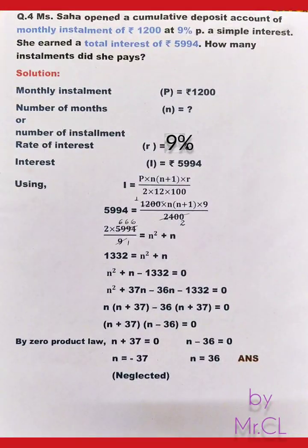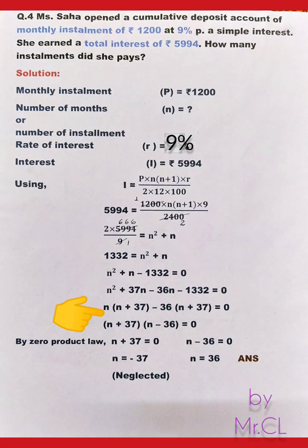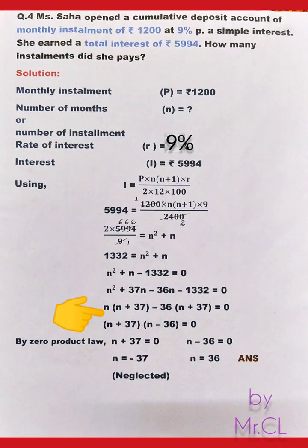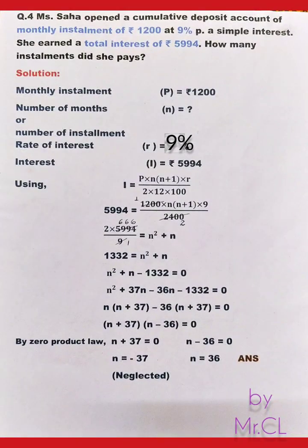Factoring: n(n + 37) − 36(n + 37) = 0, giving (n + 37)(n − 36) = 0. By the zero product law, either n + 37 = 0, so n = −37 (rejected, since the number of months cannot be negative), or n − 36 = 0, so n = 36.